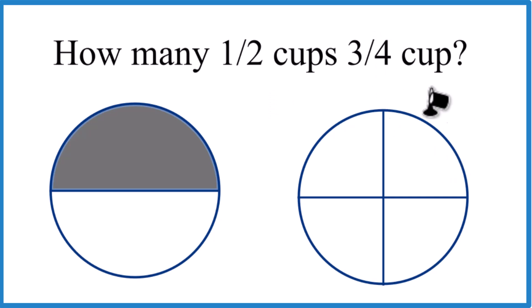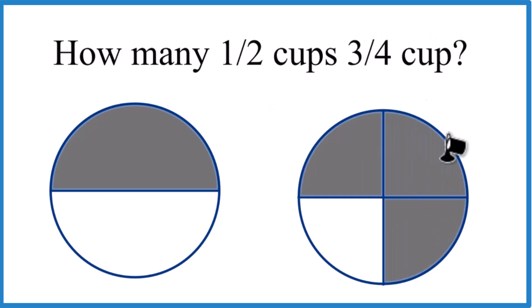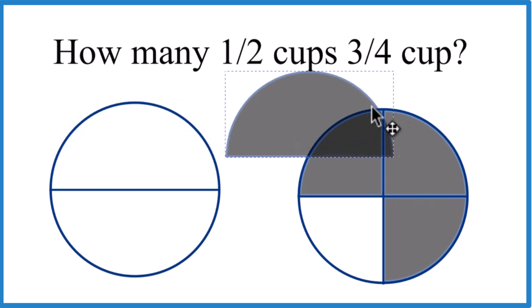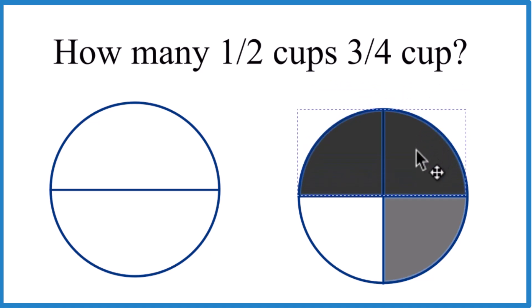Over here we have three parts out of four: one, two, three out of the four. And if you look at it, you can kind of see that one half, it's going to go in there half and then half of that again.